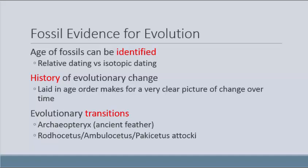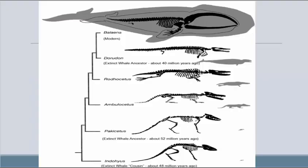By finding old fossils and comparing them to current samples, we can get a wonderful history of evolutionary change — laying fossils in order gives a nice picture of change over time. There are some neat evolutionary transitions we can follow. Archaeopteryx is an ancient feathered creature, a kind of cross between a bird and a dinosaur. Then we have Rhodhocetus, Ambulocetus, and Pakicetus — all intermediaries between an ancient land mammal and the modern whale, showing a gradual shift from a mammal living on land to a mammal living in the ocean.